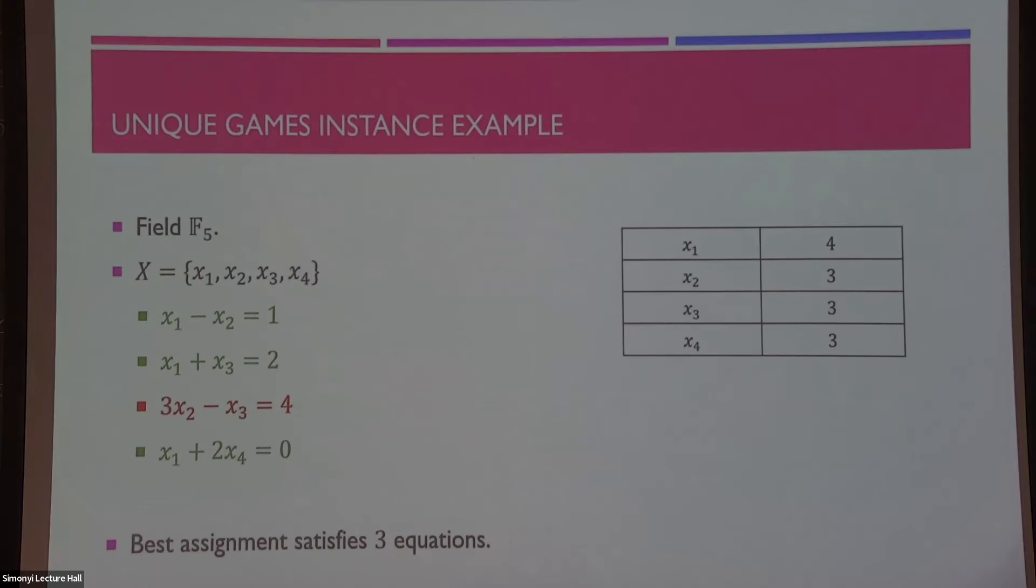Just a quick example, so we'll stay on the same page. For example, we could take as input this field F5, four variables in these four equations. In this case, we'd like to output an assignment like this, which will satisfy three out of the four equations, the three green ones.